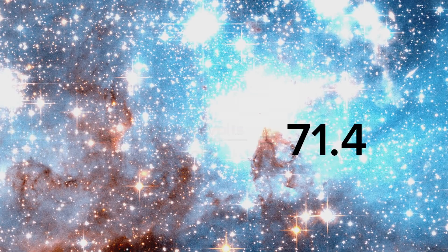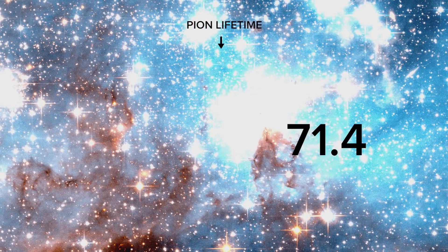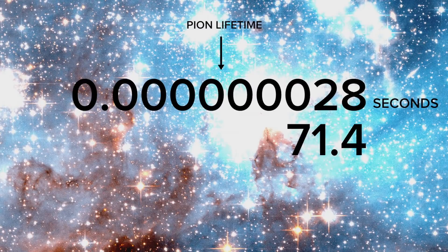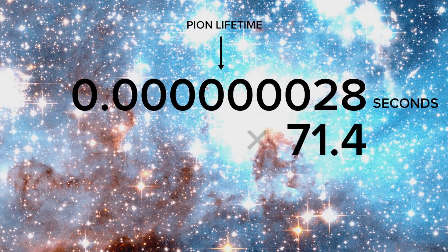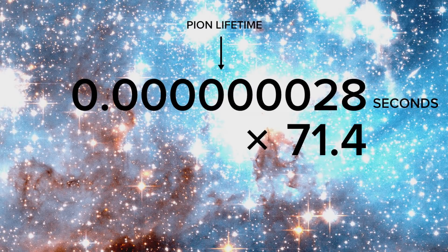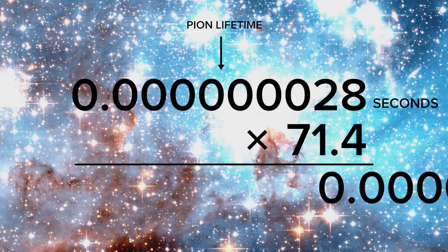So that means, while the lifetime that the pion experiences, which is 0.28 billionths of a second, is much longer for us, specifically, 71.4 times 0.28 billionths of a second, or 2 millionths of a second.